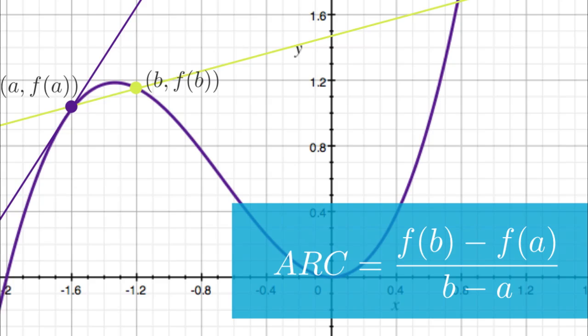Remember, though, that we're trying to find the instantaneous rate of change at the tangent point. So, if we start moving b f of b closer and closer to a f of a, and we continue calculating the average rate of change between the closer and closer points, we'll start to see the average rate of change approach a specific value.